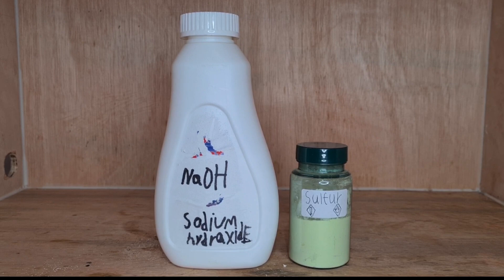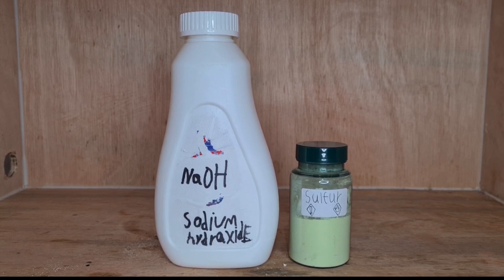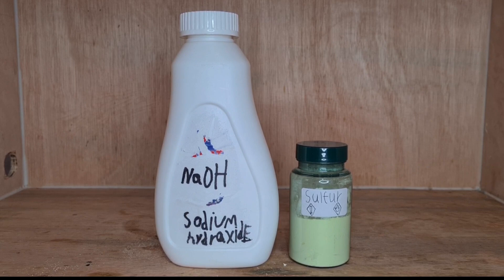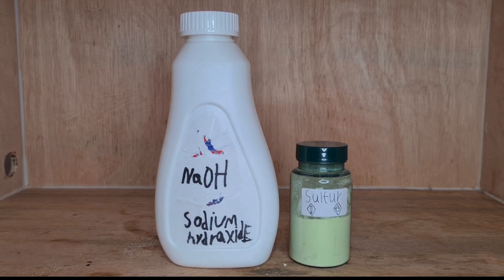Okay, so this is part one of two of making mercury metal. In this video we're going to be making a solution of sodium sulfide. If you're wondering why I'm going to need it, you'll see in the next video. All you're going to need for this is sodium hydroxide and some sulfur.